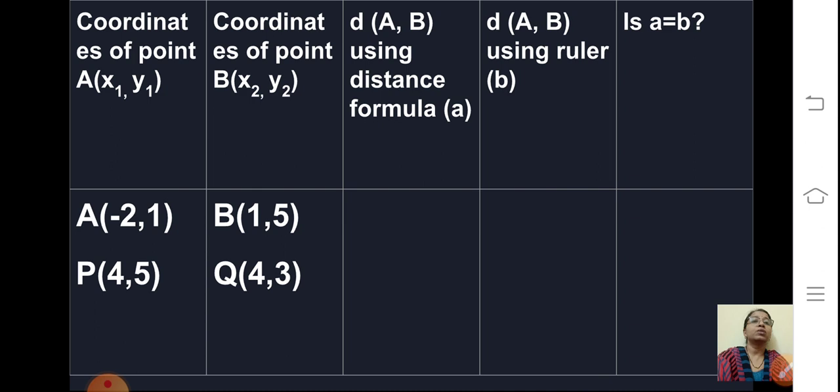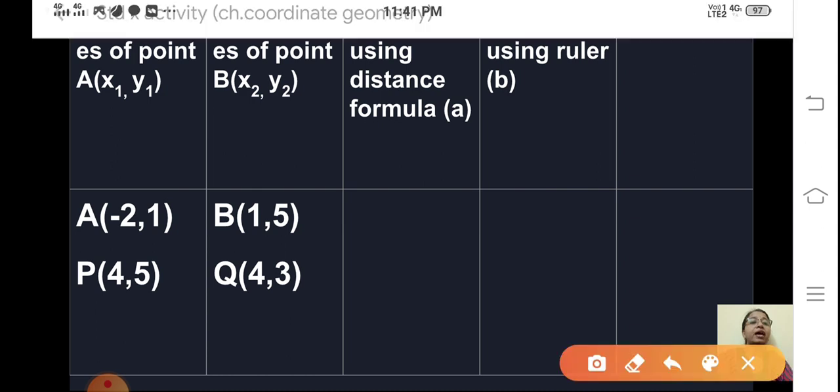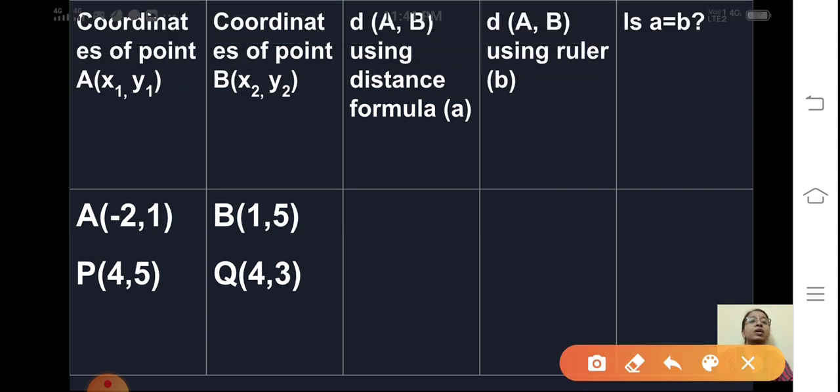Then we have calculated distance AB using distance formula. That calculation part you have to do in procedure. And that value you write here and consider it as A.